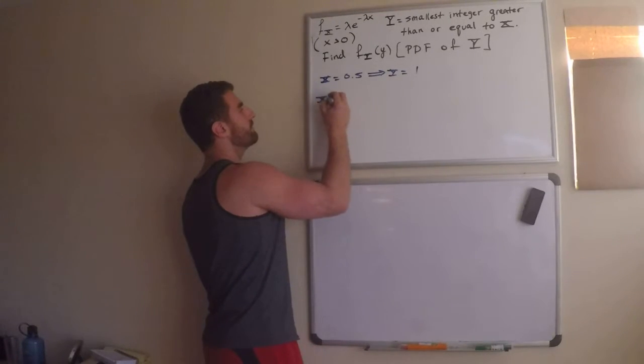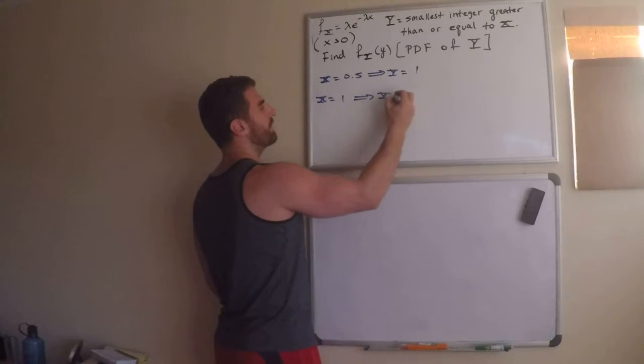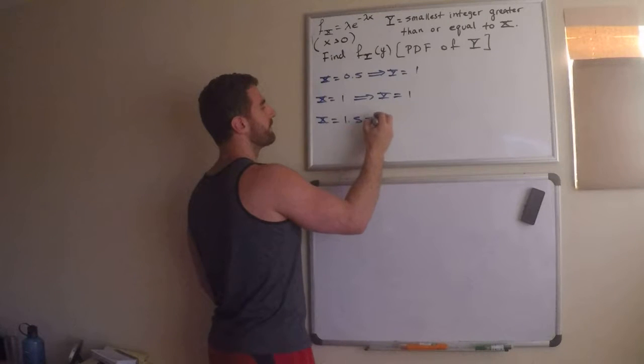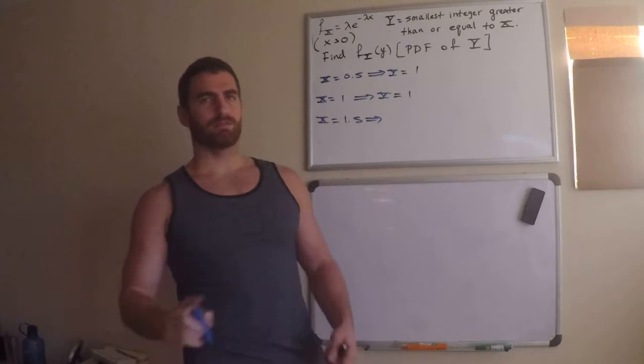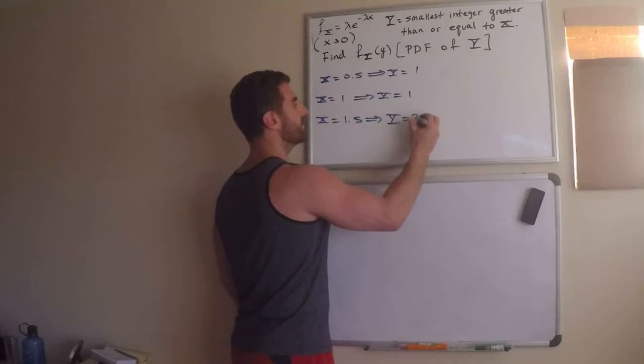What if x is equal to 1? Smallest integer greater than or equal to 1. That's 1. What if x is equal to 1.5? Smallest integer greater than that is 2. So, y is equal to 2.